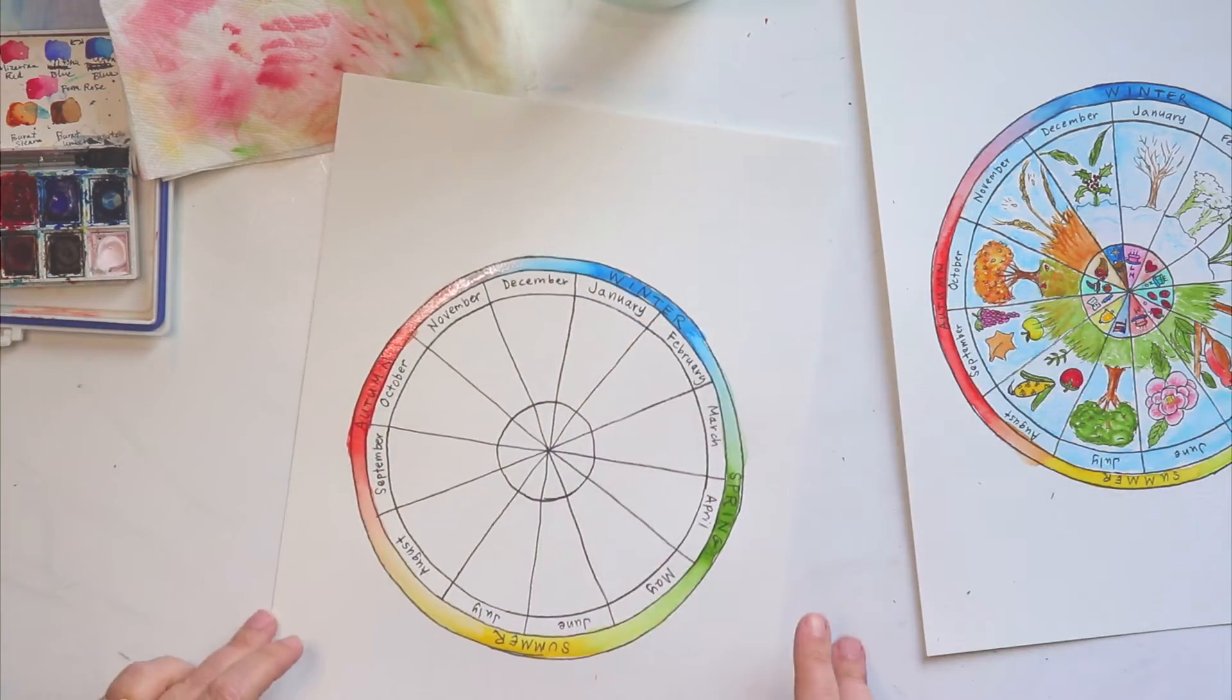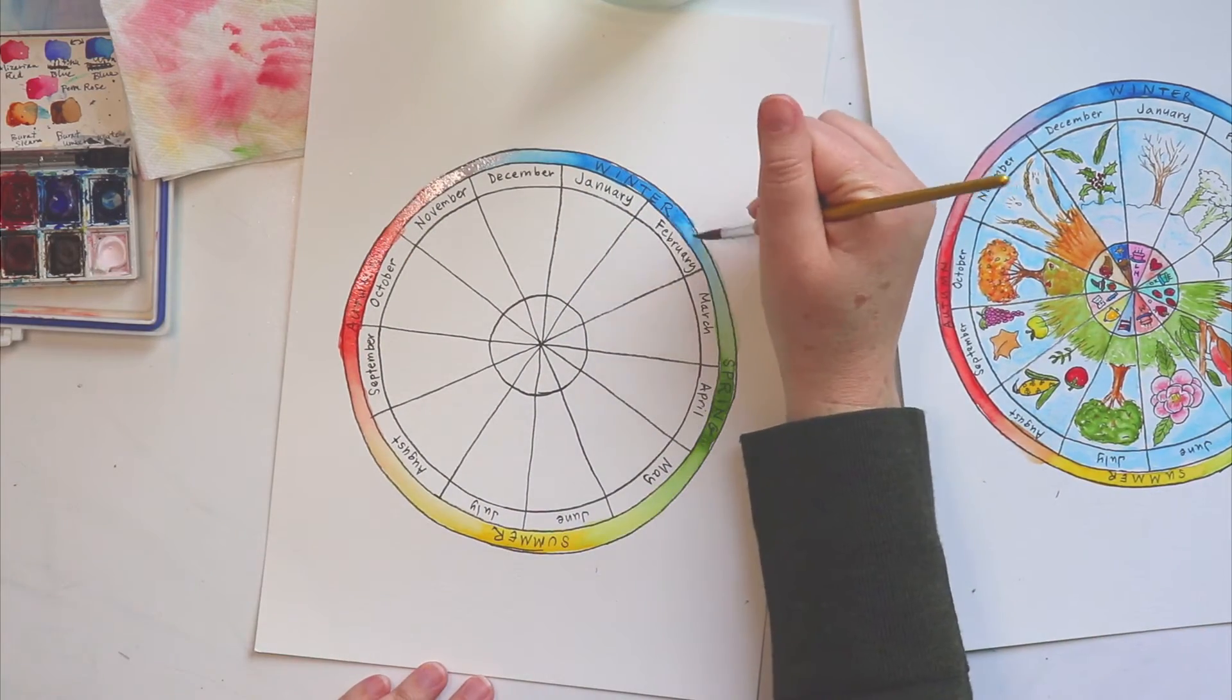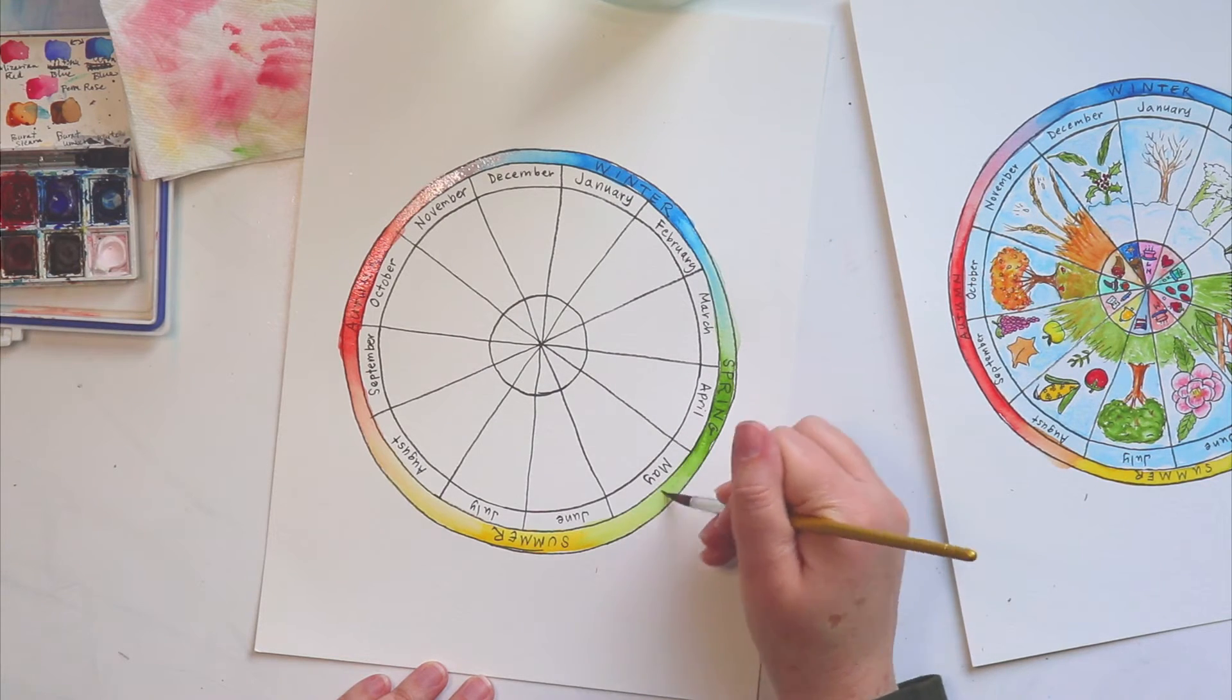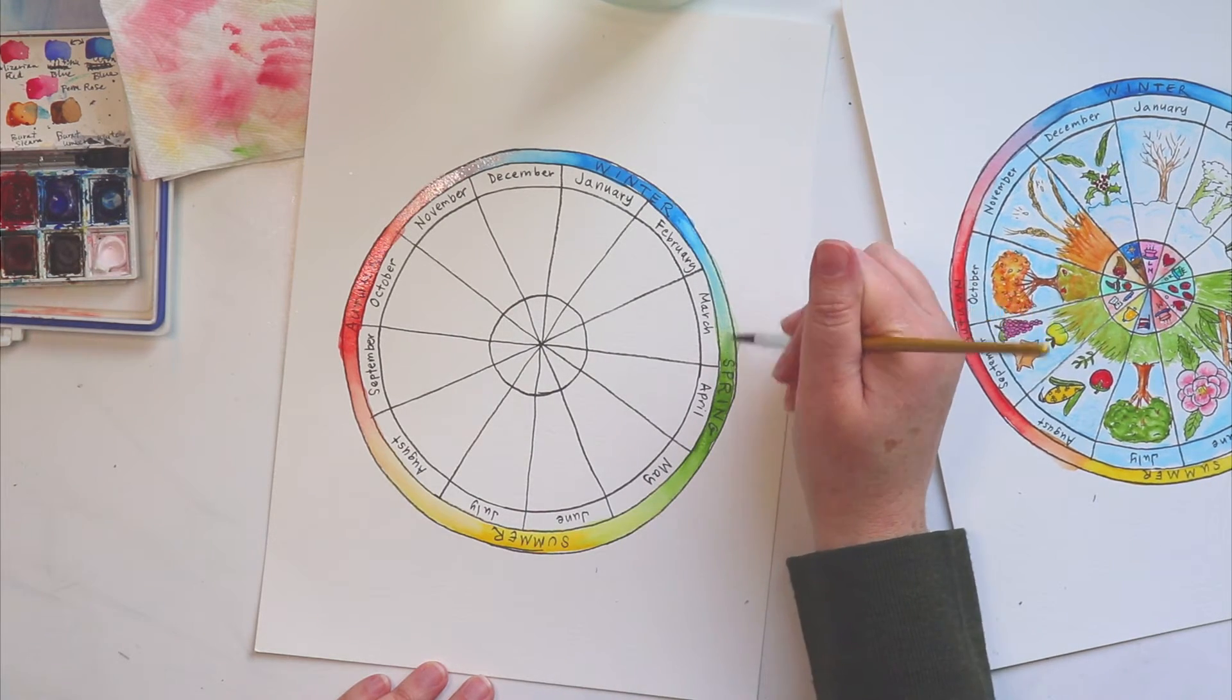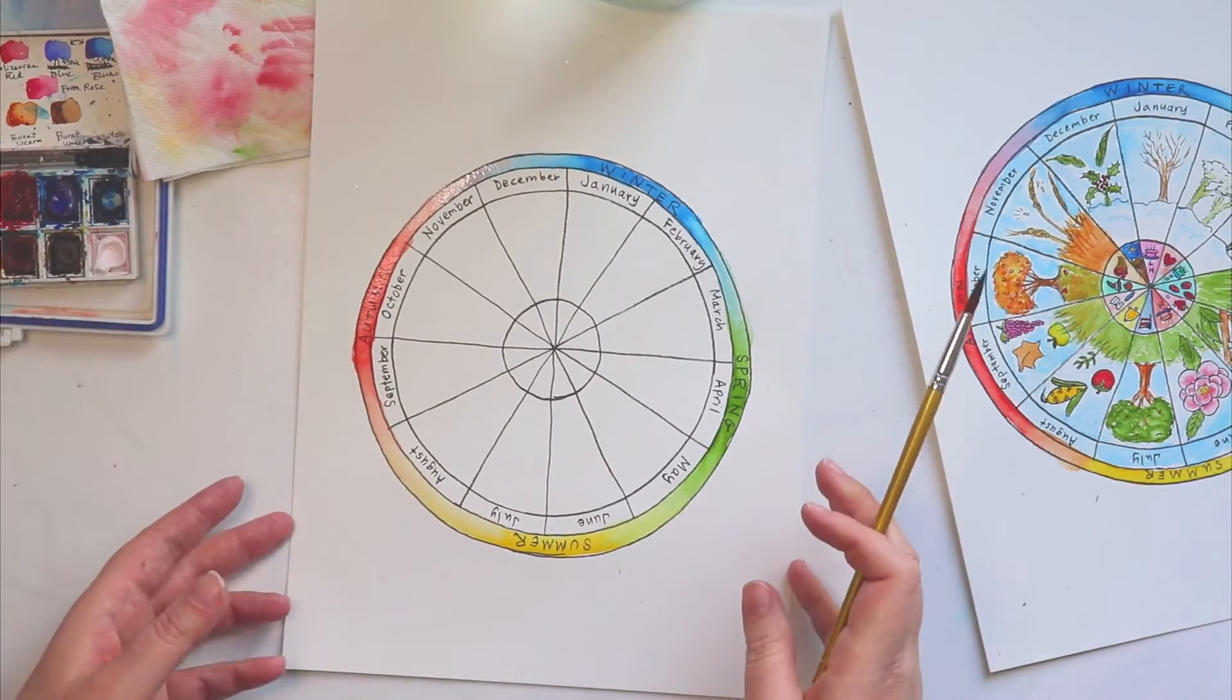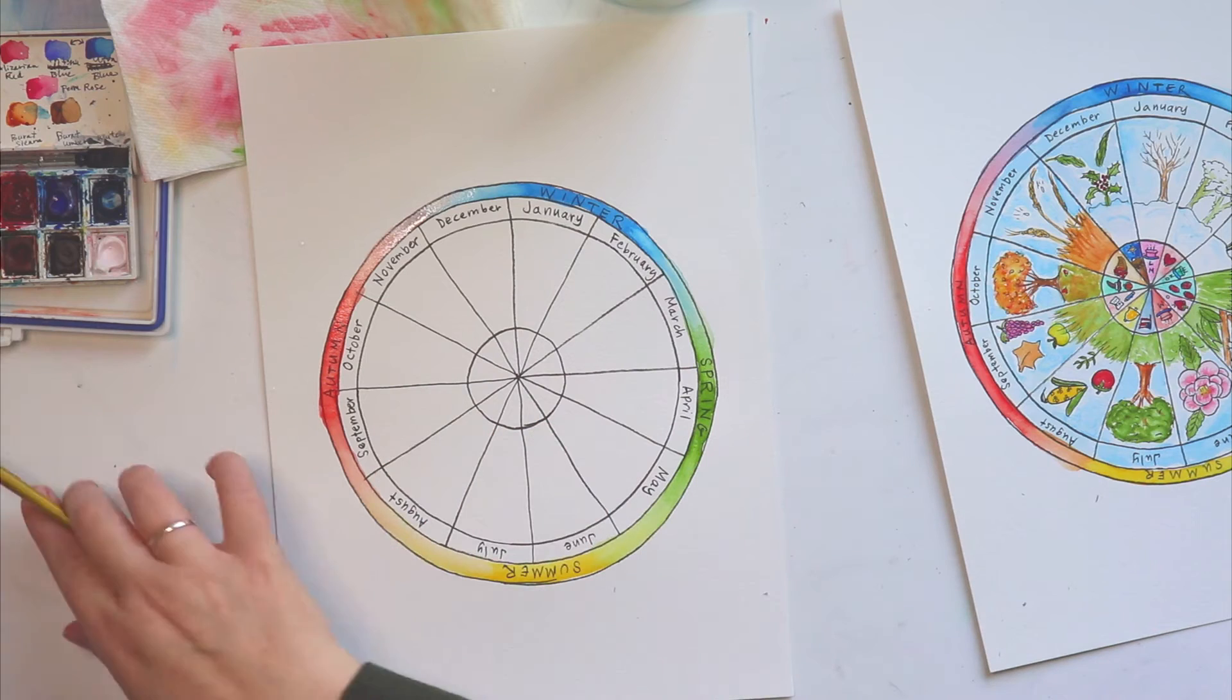So that gives us a nice rainbow on the outside of our phenology wheel. Just a nice beautiful start to that. And I'm just going to move things around just a little bit here. You can do that however you want. Okay, so now comes the fun part. This is where we're going to fill in our first month.